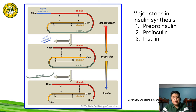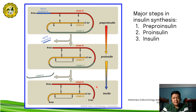The process of conversion from preproinsulin to proinsulin occurs in the ER, and within the ER the proinsulin will be converted into the mature form of insulin. This will then be packaged in the Golgi apparatus for secretion or release into the bloodstream.